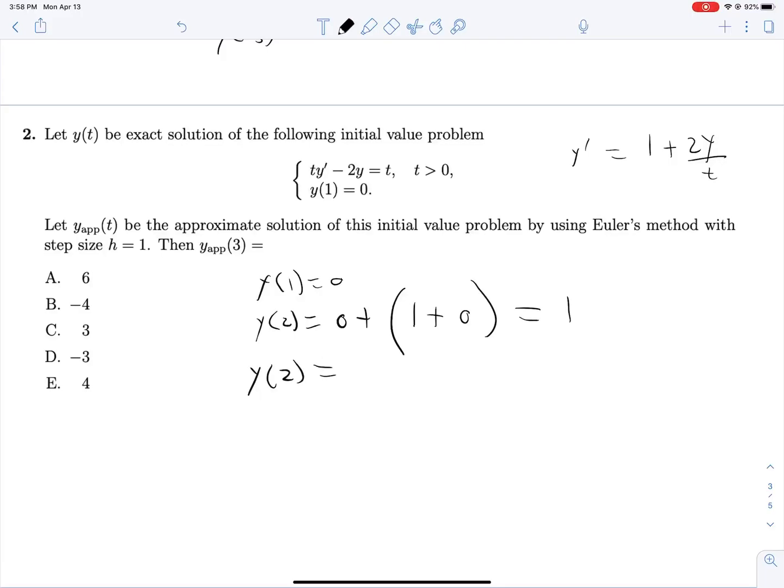y of 2 is approximately 1. And if we're approximating y of 3, which will be our final step, that's y of 2 plus our time step size, which is 1, multiplied by y prime evaluated at 2, 1. So that will be 1 plus 2 over 2, so 1 plus 2,